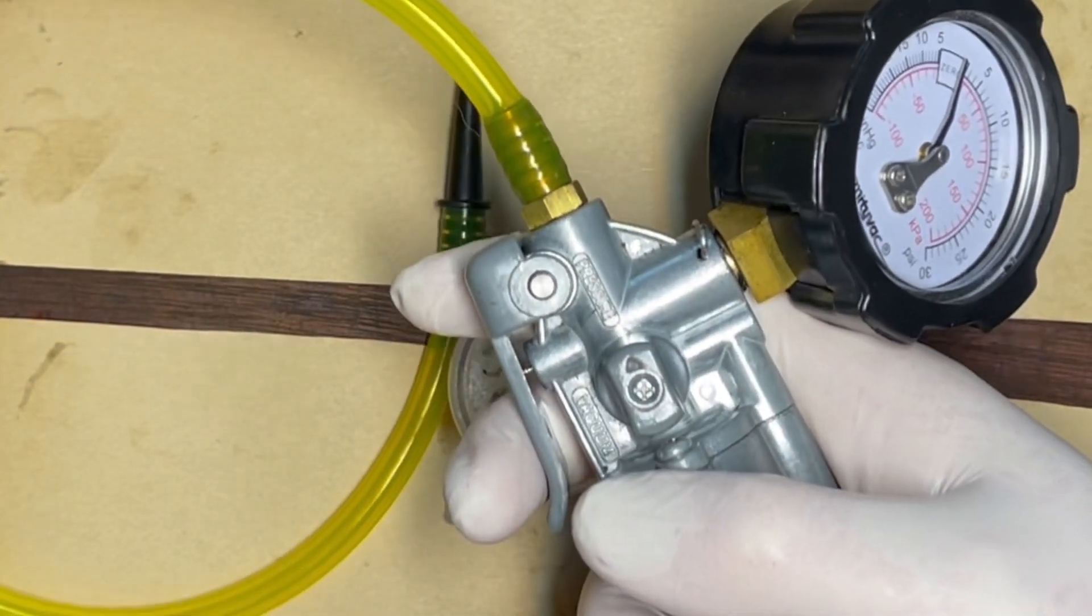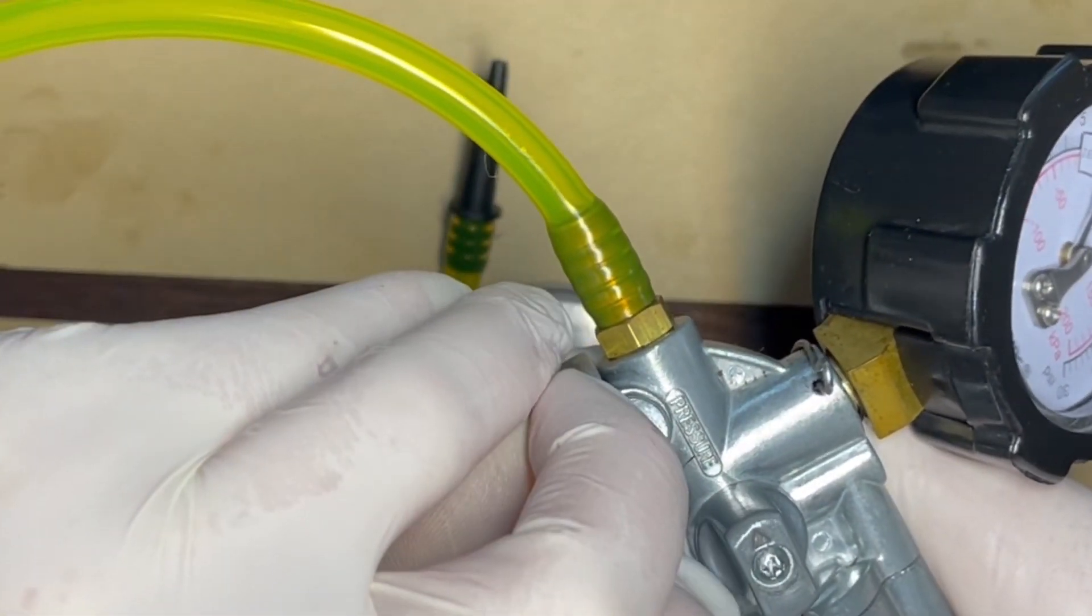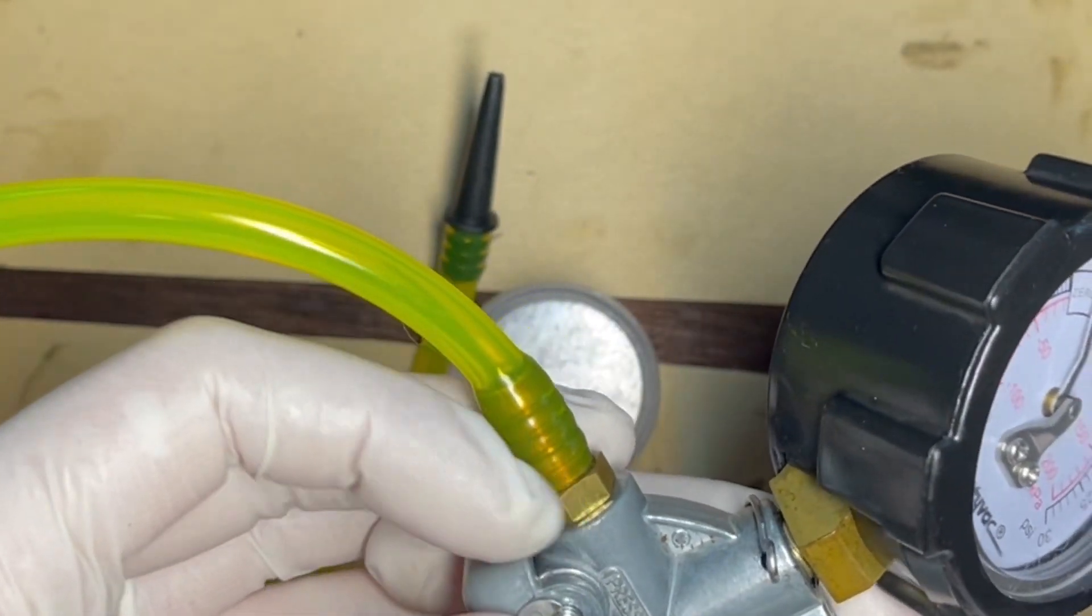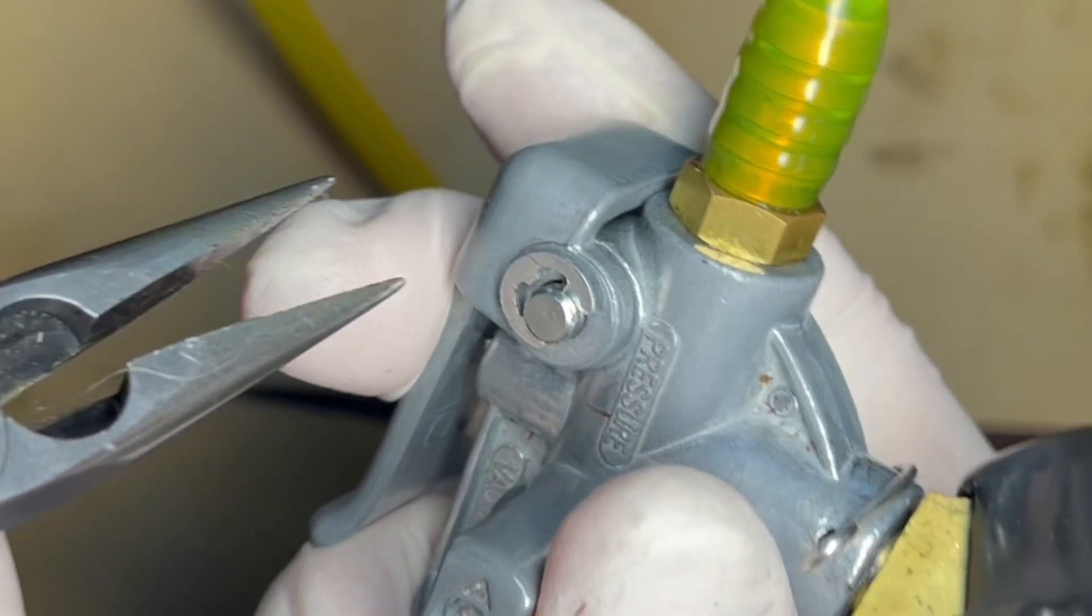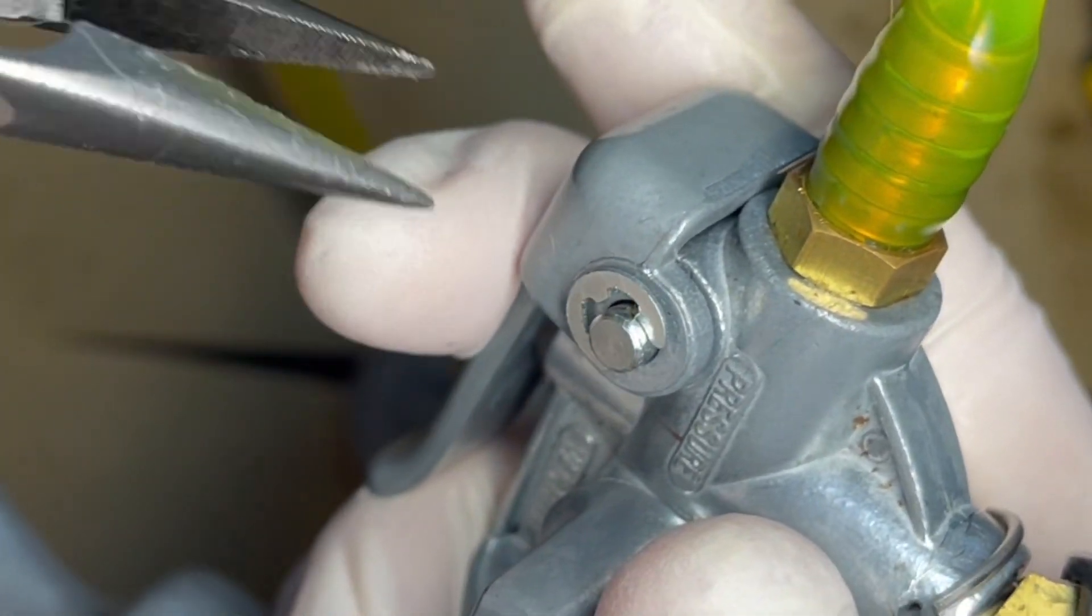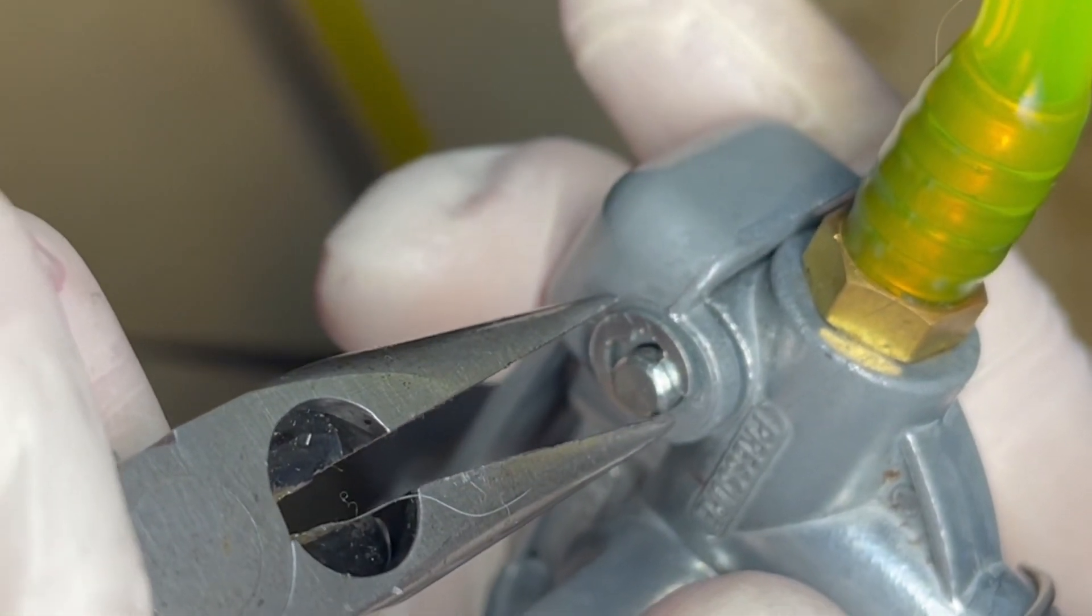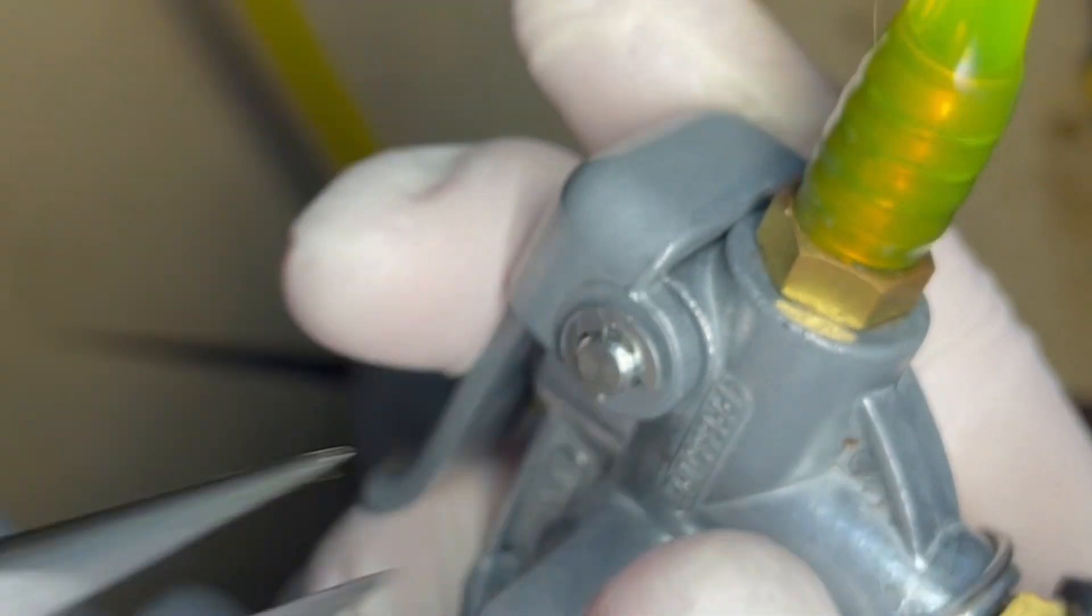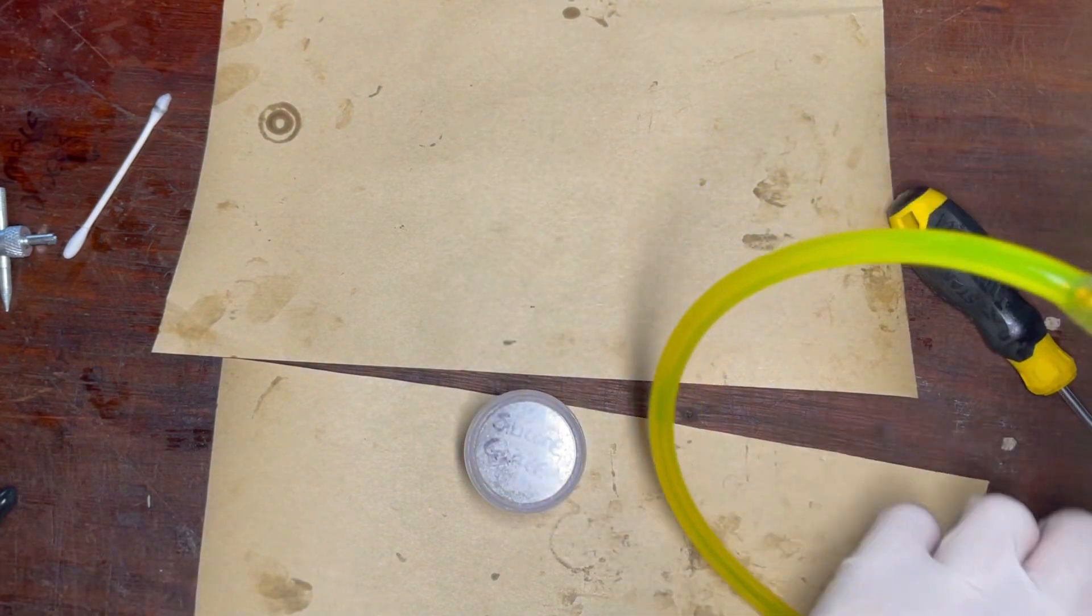And then last but not least, we have the little circlip. Be careful of these. They like to go flying. The flat side of the circlip must face out. And then we want to gently seat that circlip home. So, give it level. There we go.